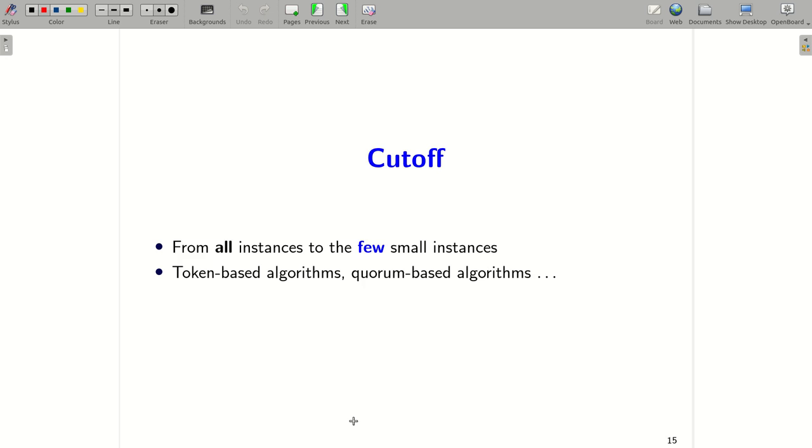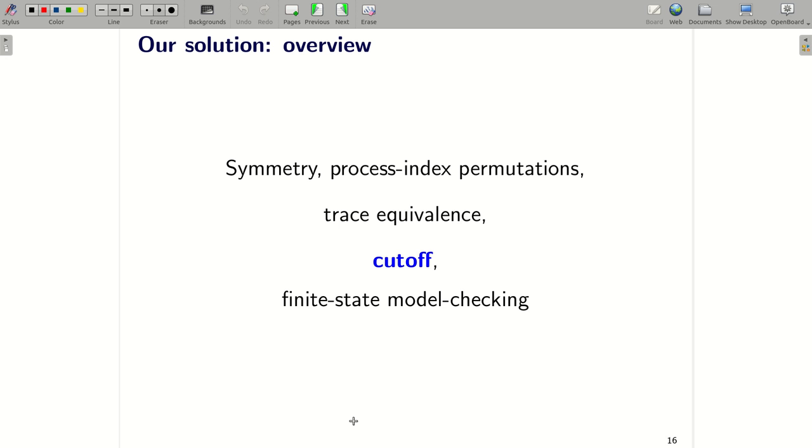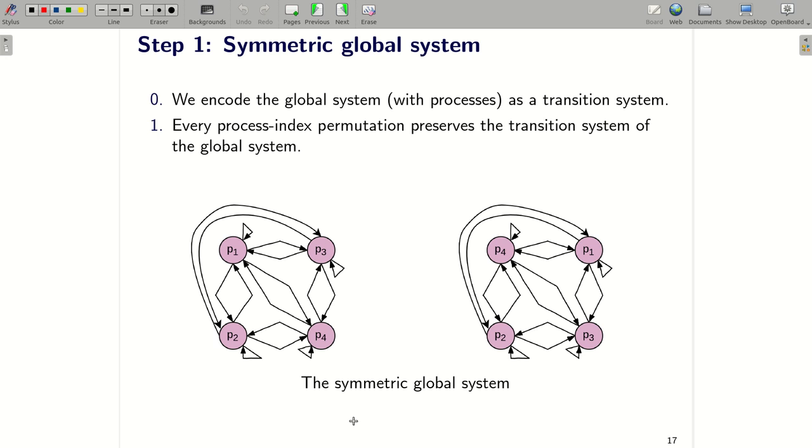This is the overview of our solution. You can see that there are four steps. In step one, we will prove that the global system is fully symmetric. Here you can see that this is an instance with four processes. And if we change process indexes, then we obtain the same system.